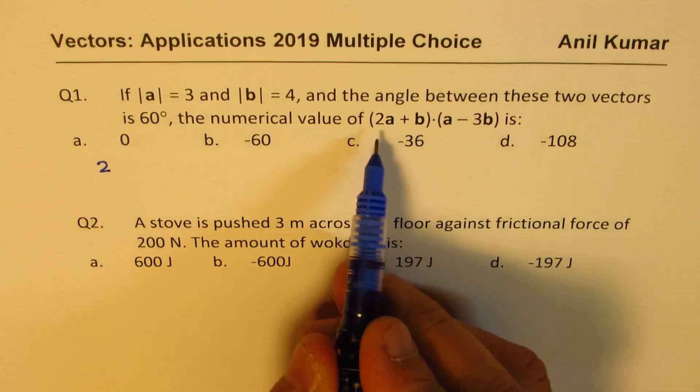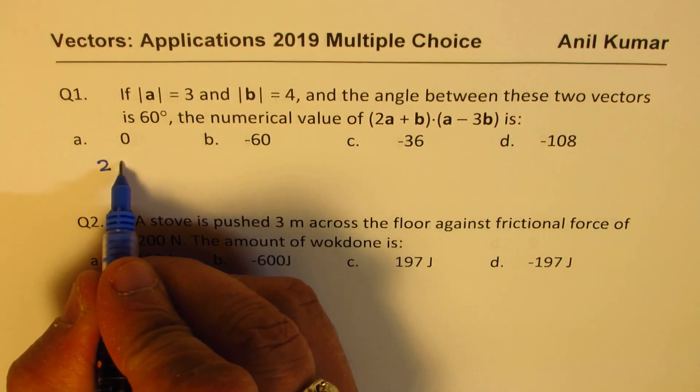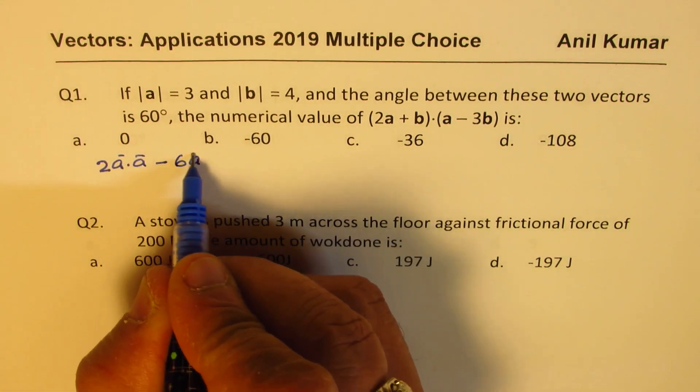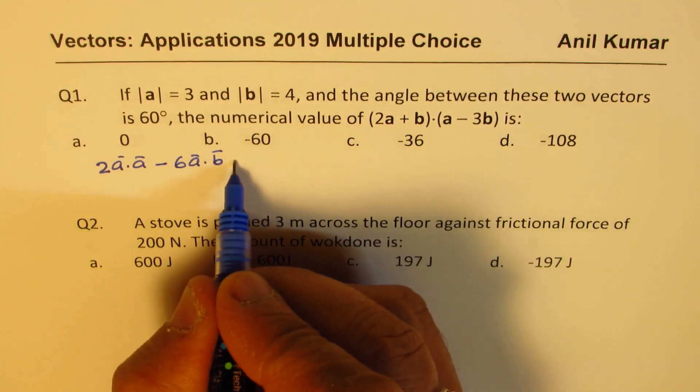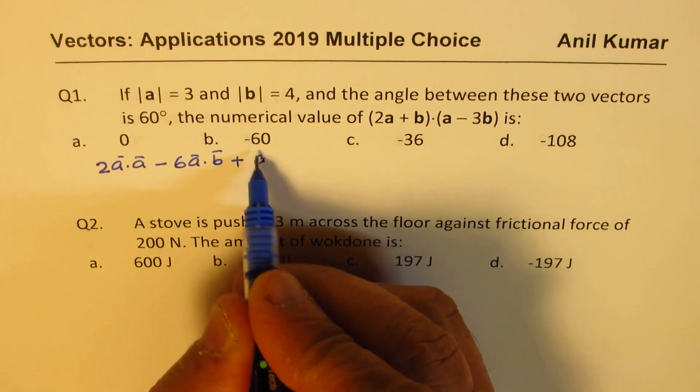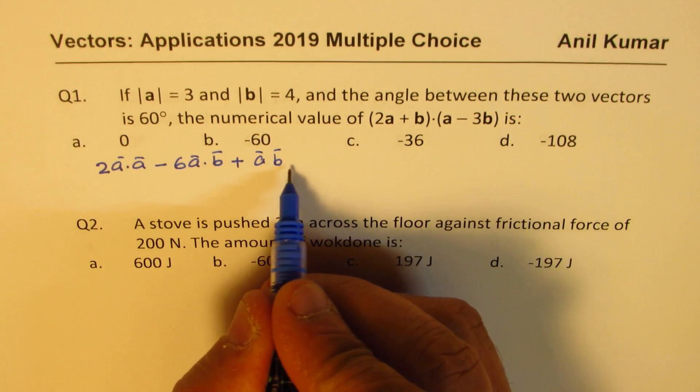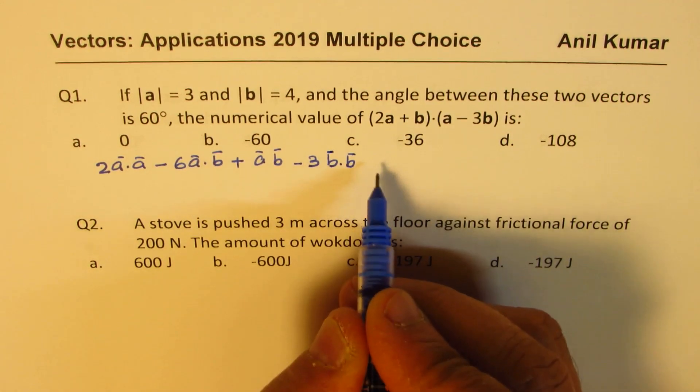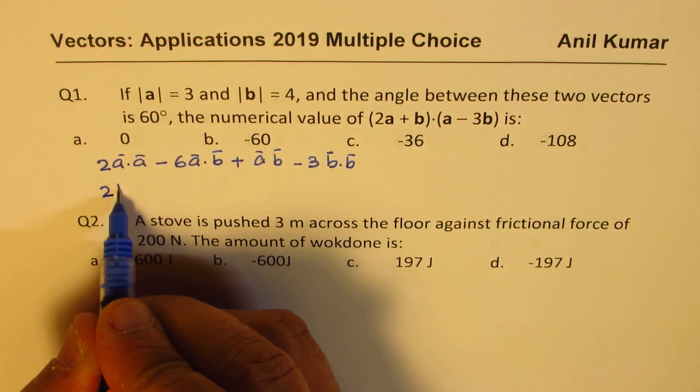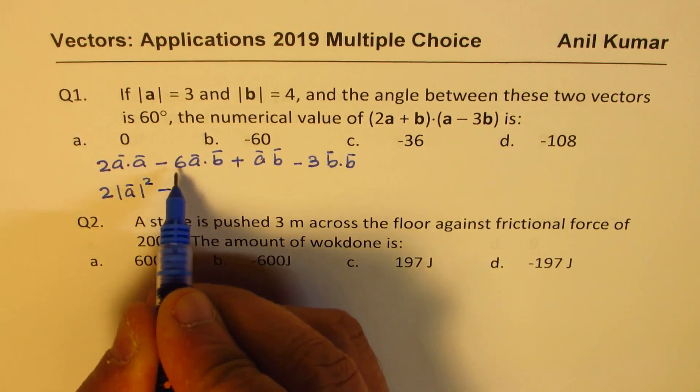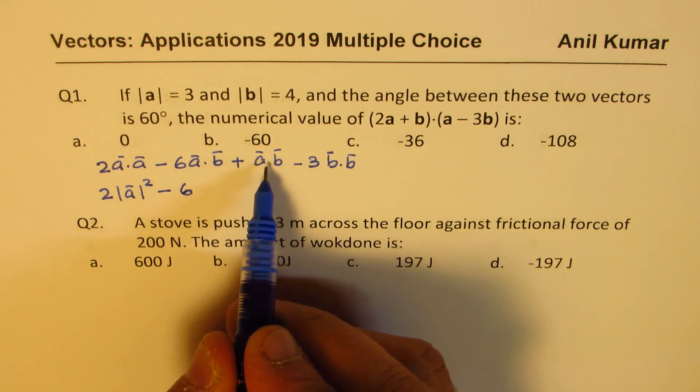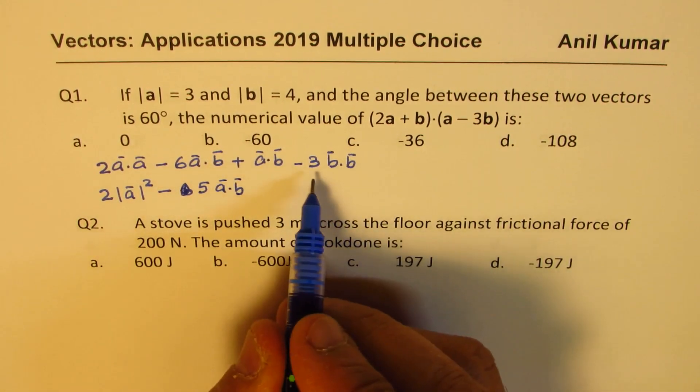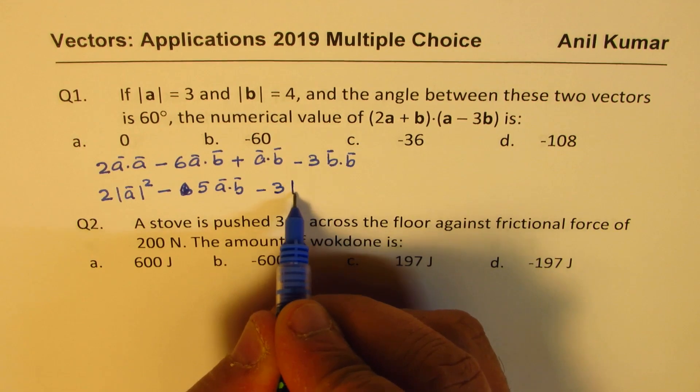So we get 2A·A minus 6A·B. Then we have B·A, which we can also write as A·B since dot product is commutative. And here we get minus 3B·B. Now A·A is the magnitude of A squared minus 6 times A·B. We could have combined them, so that gives me 5 times A·B. And this is minus 3 times magnitude of B squared.